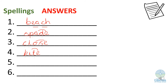On to our red words — you can't Fred a red so I will say letter names. The word was 'water' — W, A, T, E, R — water. And the last word was 'watch' — again you can't Fred a red so I will say letter names: W, A, T, C, H — watch. Great job with your spelling test — remember to tick or fix your work.